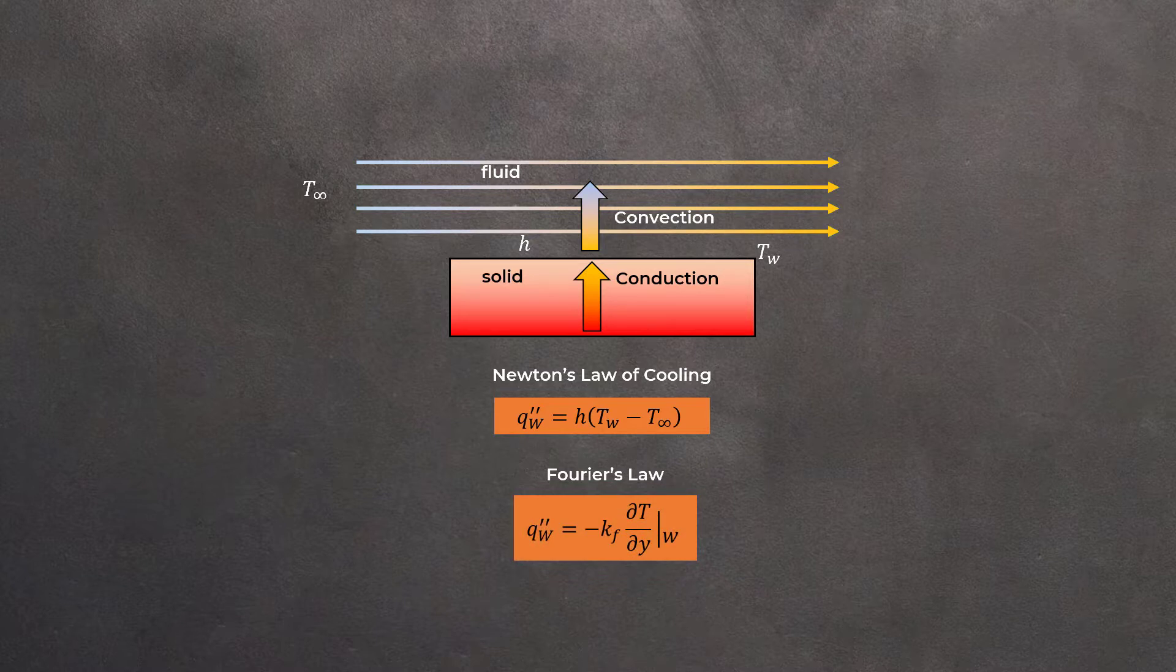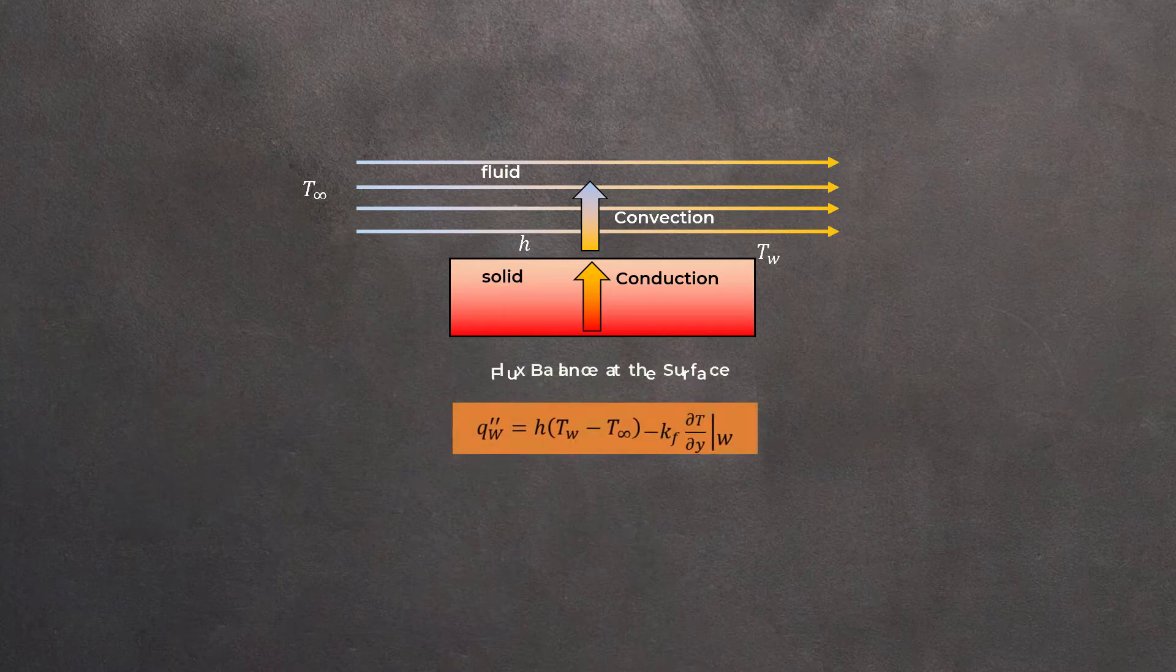Neglecting radiation, these two fluxes must be equal at the wall, and as a result, we get the following flux balance.